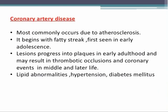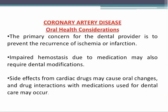The next cardiovascular disease discussed is coronary artery disease, which most commonly occurs due to atherosclerosis. This begins with a fatty streak first seen in early adolescence, progresses into plaques in early adulthood, and may result in thrombotic occlusion and coronary events in middle and later life. It can occur due to lipid abnormalities, hypertension, and diabetes mellitus.